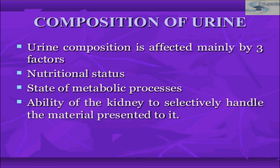On an average, a person produces around 1200 to 1500 ml of urine per day. The volume of urine depends upon fluid intake, level of physical activity, temperature, and extent of sweating.